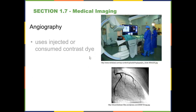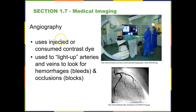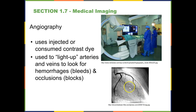Next is angiography. Angiography uses either injected or consumed contrast dye — they either put an IV in you and inject it, or you drink it. There are a variety of different kinds of contrast dyes. When used in conjunction with x-rays, CAT scans, or MRIs, they produce images of blood vessels. They're good for looking for blood vessels that are occluded or blocked, or hemorrhages where blood vessels have ruptured. The contrast dye essentially lights up the arteries, making them more visible.